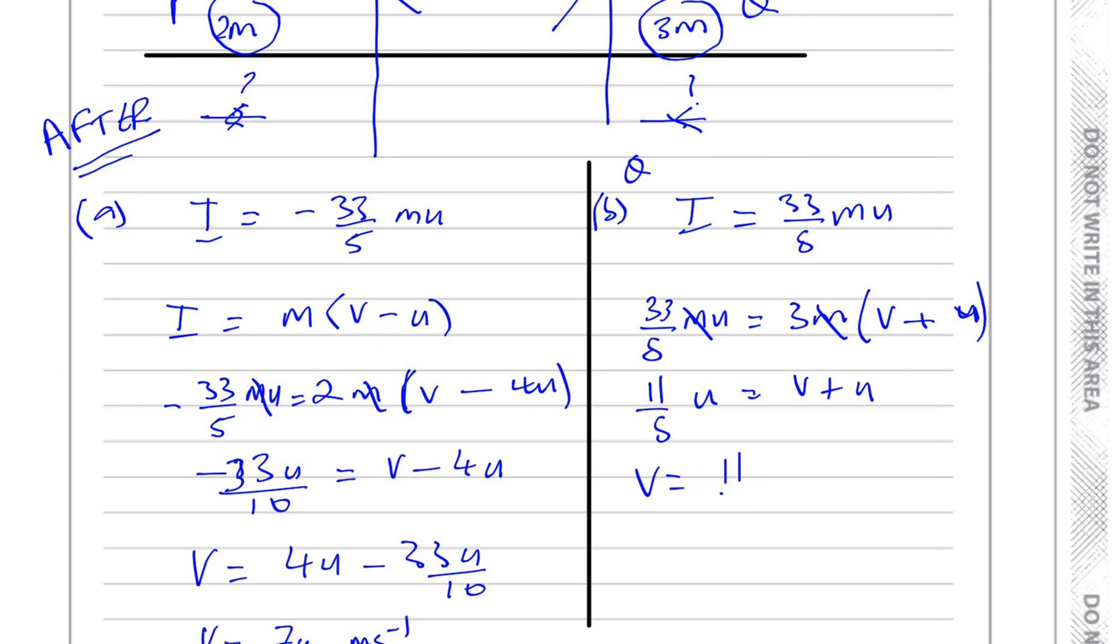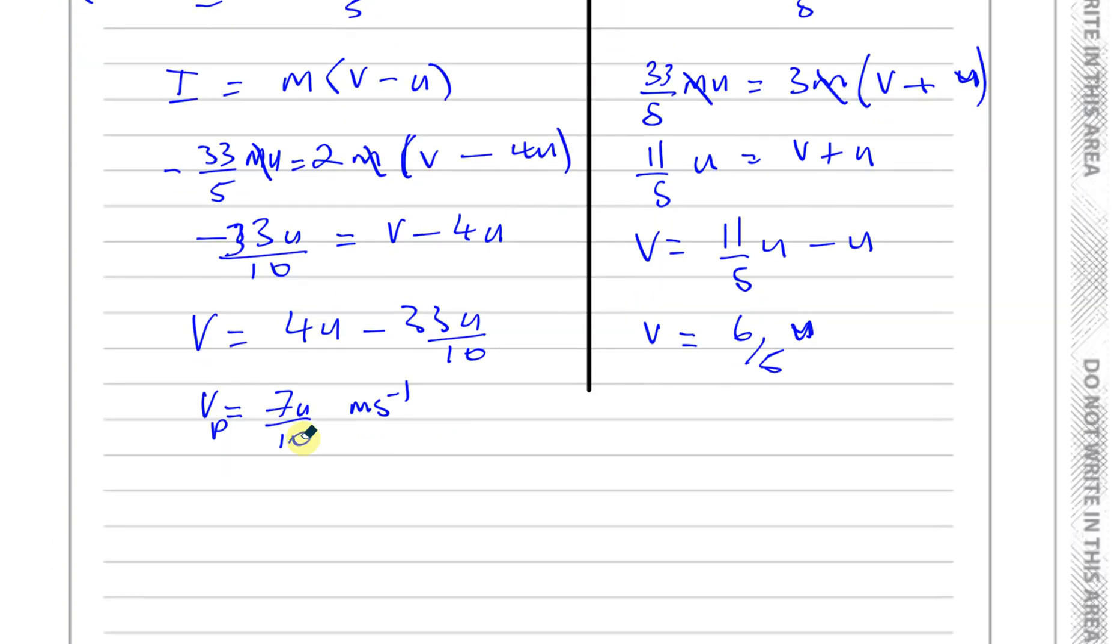So what we need to do here is to state the directions. So for this one, this is going to be due east, because they told us the direction that was moving in the beginning was east. It's staying in the same direction. And this one is going to be also due east. They're both going to be due east because it's positive, and we took positive as east.